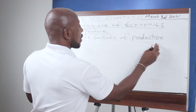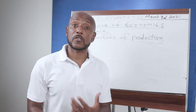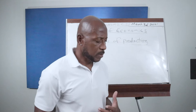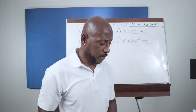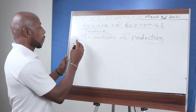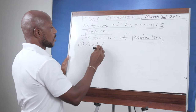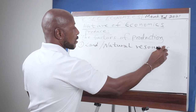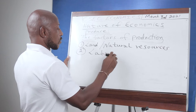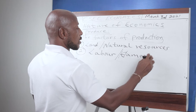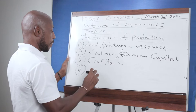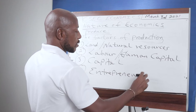The factors of production are the inputs used to make goods and services — what you use in order to produce or to make goods and services. They refer to the resources required, the resources that are necessary to produce a good or service. These factors of production are categorized as follows: we have land or natural resources, labor which is also sometimes referred to as human capital, capital, and the fourth category is entrepreneurial ability.